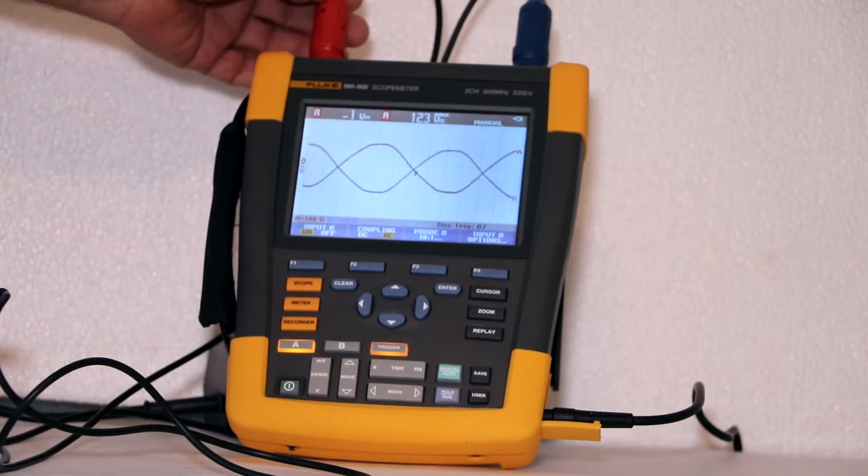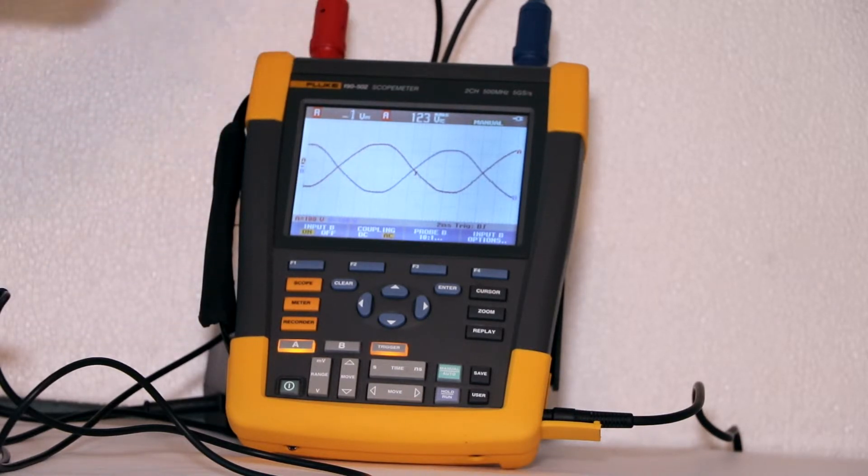We'll connect channels A and B to utility power as accessed through a branch circuit. For this demonstration we want the two signals as depicted in the display to be 180 degrees out of phase.